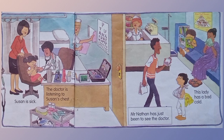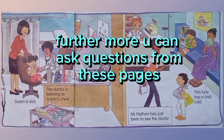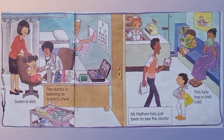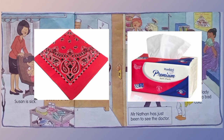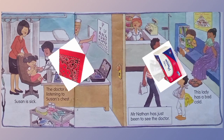This is a bookcase. Books are kept in it. This is a medical scale. It tells us about our height or weight. This is a cash register. She is staff and her work is to collect the fees and send patients turn by turn to the doctor.